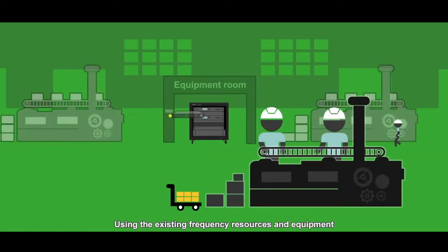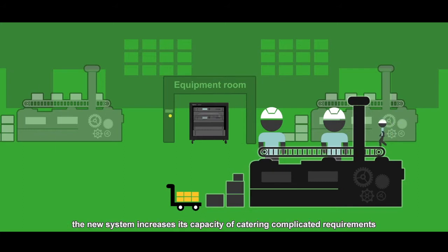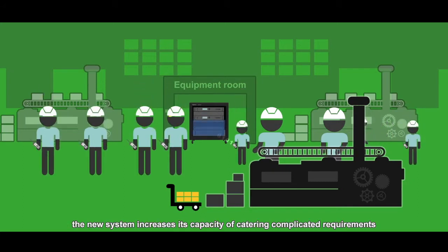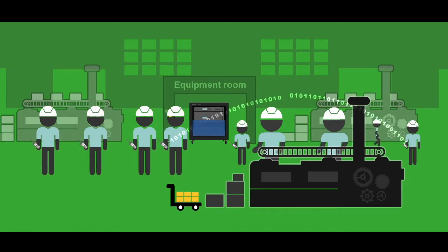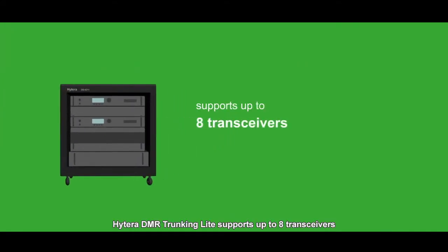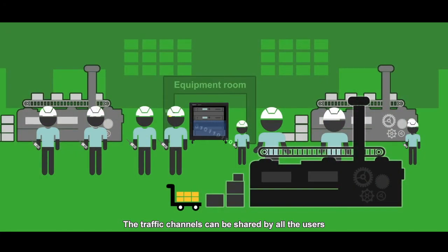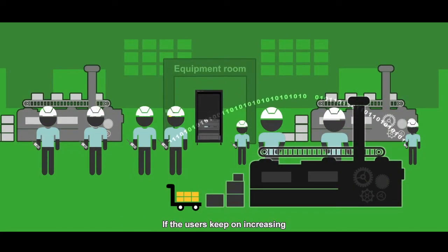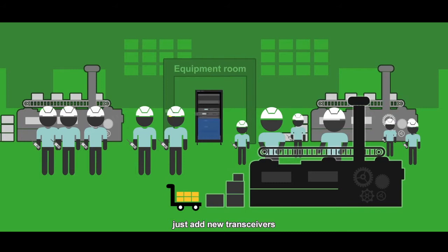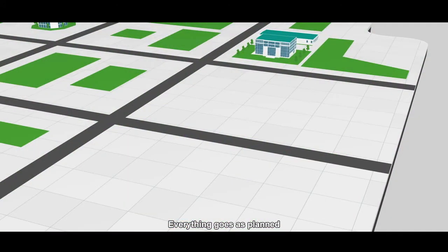Using the existing frequency resources and equipment, the new system increases its capacity of catering to complicated requirements. Hytera DMR trunking light supports up to 8 transceivers and provides 15 traffic channels per base station. The traffic channels can be shared by all the users. If the users keep on increasing, just add new transceivers. Everything goes as planned.